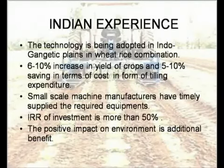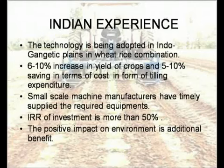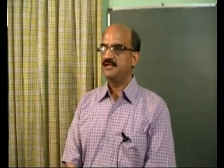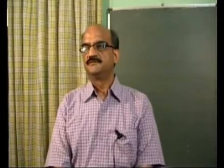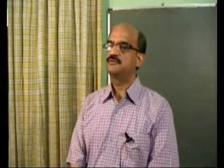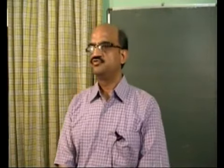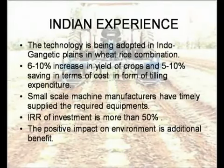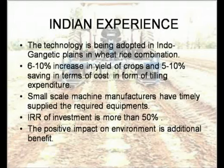Small-scale machinery manufacturers from Punjab and other areas responded very timely and developed the small implements required for direct sowing under zero-till agriculture. Direct seeding equipment is now available that can be run with tractors, or used by hand or animal power. The positive environmental impact, as already discussed, will also be seen in India once the practice is widespread.